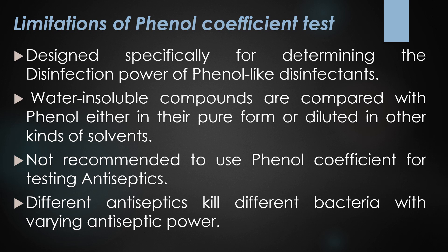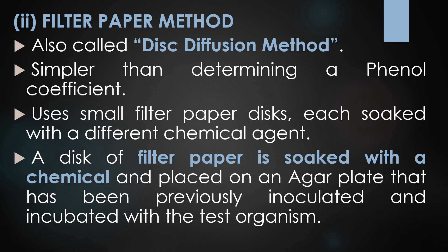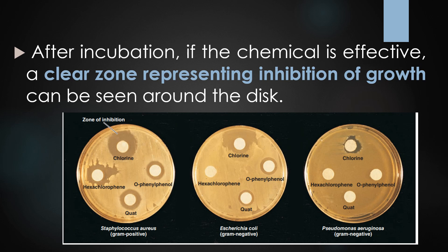The second method for evaluating chemical disinfectants is the filter paper method, also called the disc diffusion method. It is simpler than the phenol coefficient test. A small filter paper disc is soaked with a chemical agent and placed on a Mueller-Hinton agar plate previously inoculated with the test organism. After 24 hours incubation, if the chemical is effective, a clear zone of inhibited growth is seen around the disc.